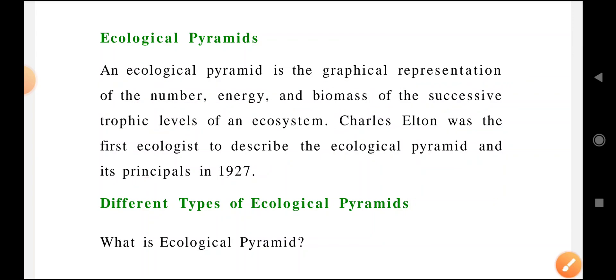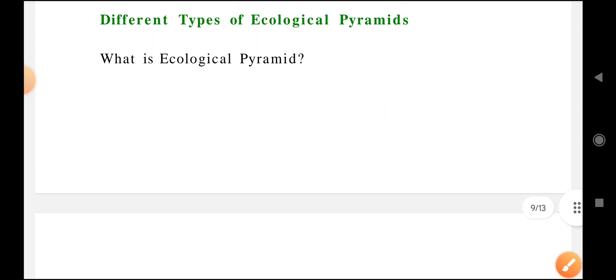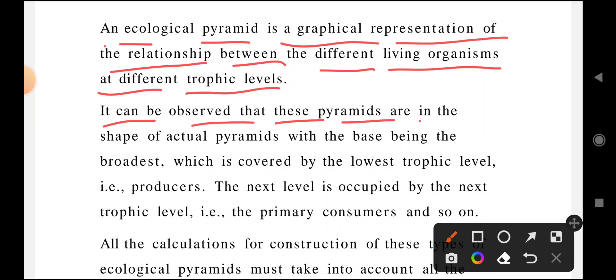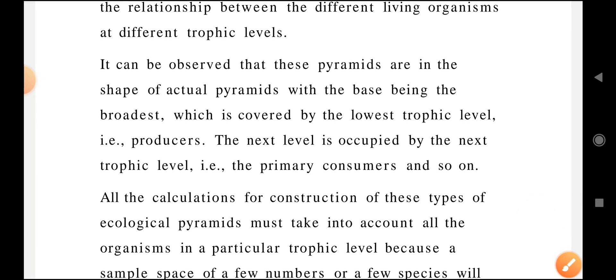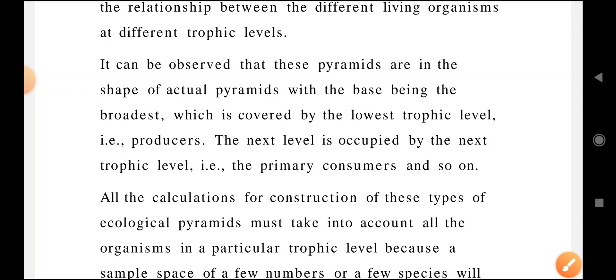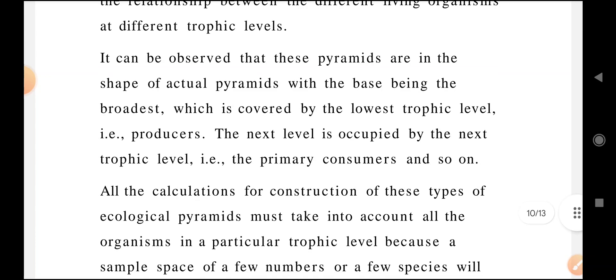It is a graphical representation of organisms at each level of the ecological system. An ecological pyramid is a graphical representation of the relationship between different living organisms at different trophic levels. These pyramids are in the shape of actual pyramids with the base being the broadest and the top being narrow.